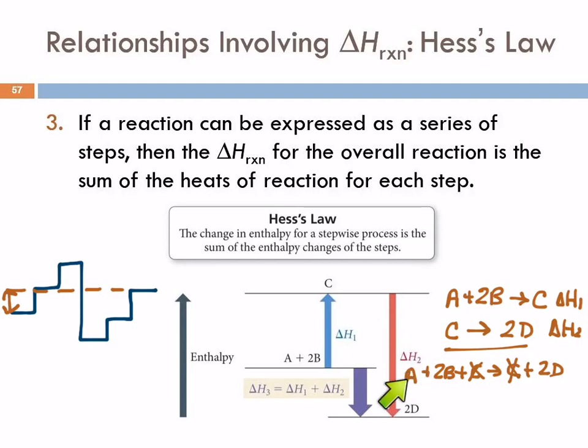We can also measure A plus 2B to form 2D. Instead of trying to measure that reaction directly, which might be difficult for a variety of reasons. If we know the enthalpy change for each of these steps, we can see mathematically we can combine that reaction to get this, then we can combine these. This one was endothermic, this one was exothermic, the net difference, the sum of those, this one's positive, this one's negative, the sum is this one.